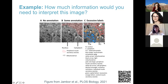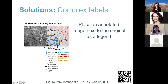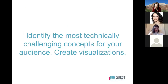One solution is to use the figure as its own legend. You can add a semi-transparent white overlay on a second version of the figure, allowing labels to stand out. You then pair labels directly with their corresponding regions on the main figure, making the legend much easier to understand and allowing readers to quickly grasp what's going on.